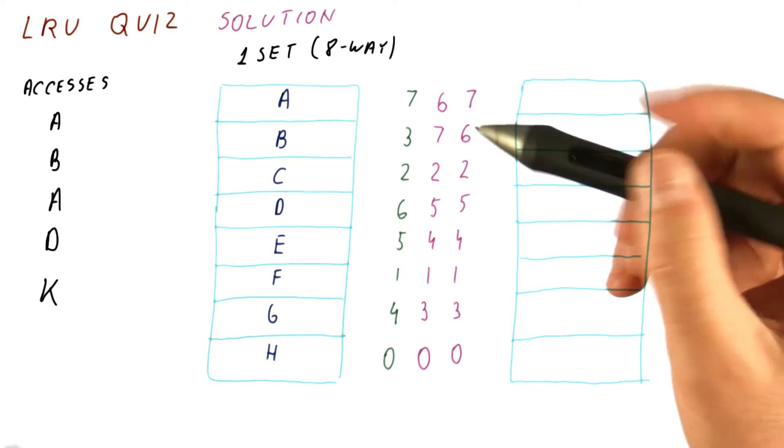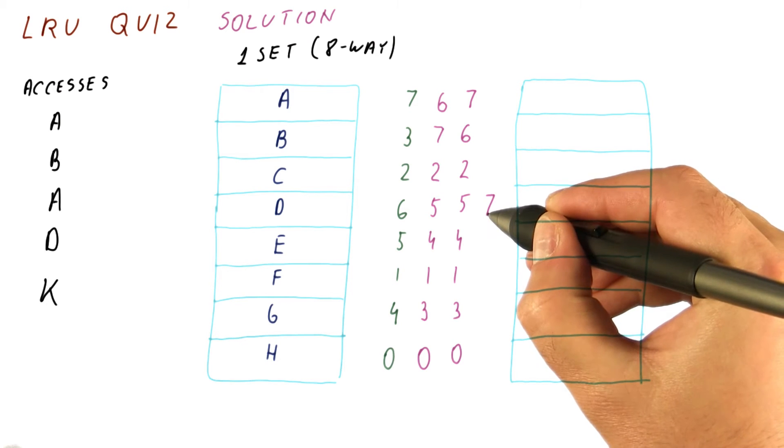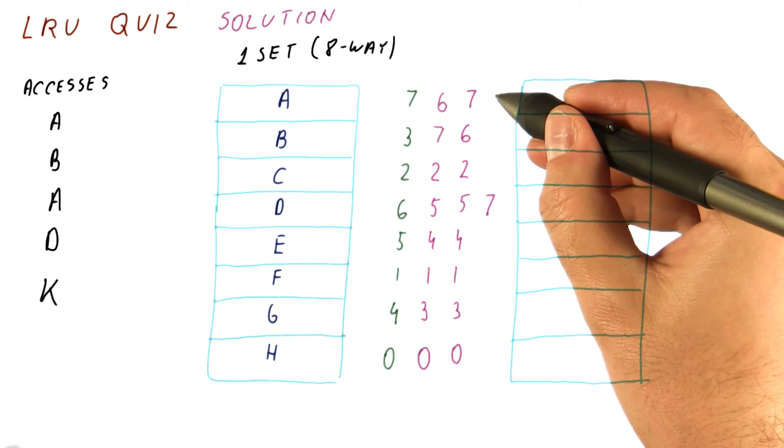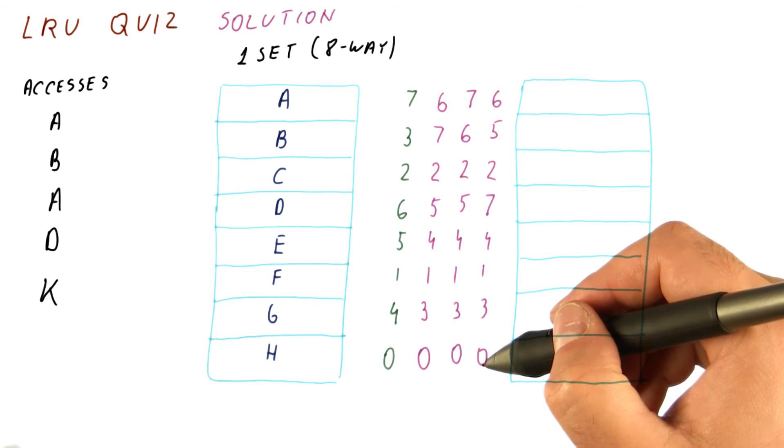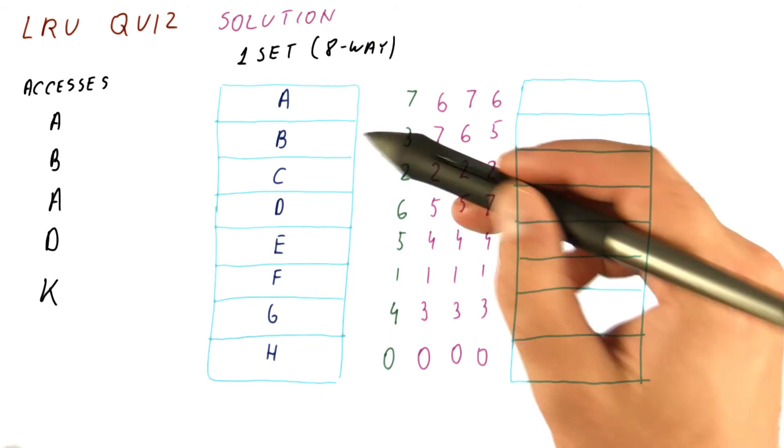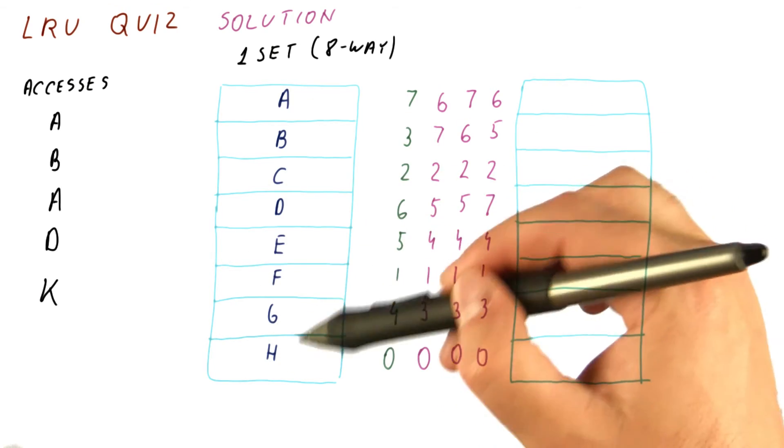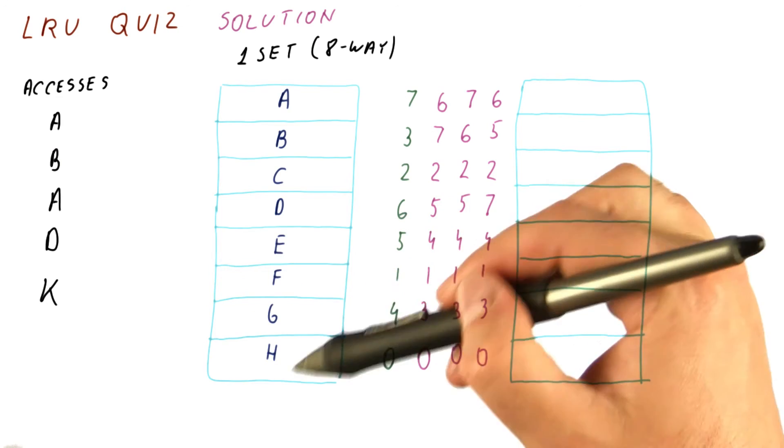Now D is accessed. This counter becomes 7. Those above 5 are decremented. The remaining ones stay the same. All of these have been hit so far, so nothing has changed in the cache. We still have exactly the same stuff there.